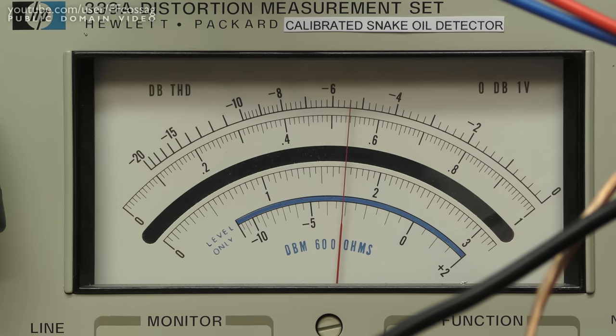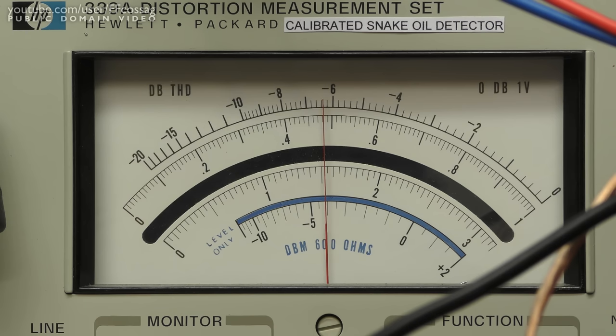And 8V, that's a solid 2dB drop from the 33V reference. 7V, another 0.4dB gone.